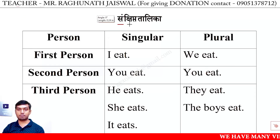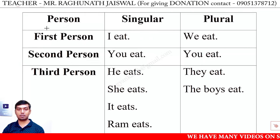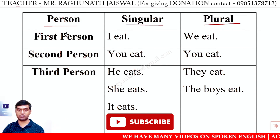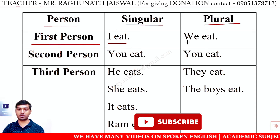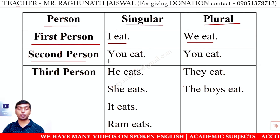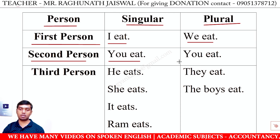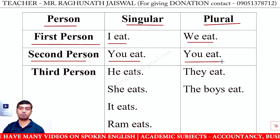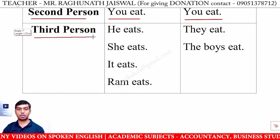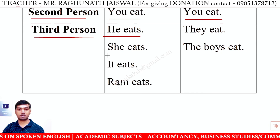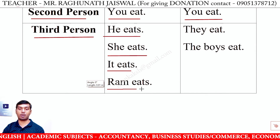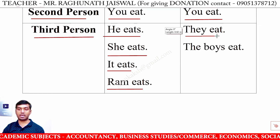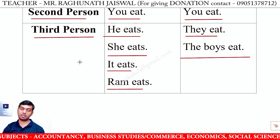आइए एक table देखते हैं — संक्षिप्त तालिका। Person / Singular / Plural: First person — I eat / We eat. Second person — You eat / You eat (singular और plural दोनों में). Third person — He eats, She eats, It eats, Ram eats (singular) / They eat, The boys eat (plural). ठीक है।